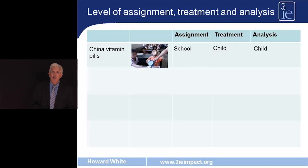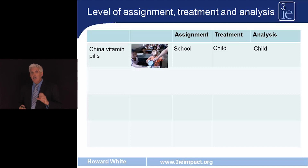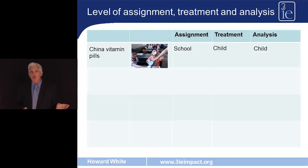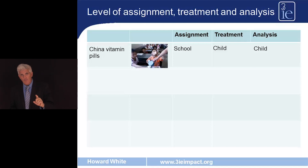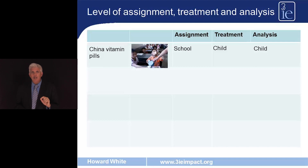The first example comes from China: a programme in rural schools providing vitamin pills to children to tackle anaemia and improve learning outcomes. 60 schools were identified as eligible, and 30 were randomly chosen to receive the programme with the other 30 as the control group. The unit of assignment is the school; in chosen schools every child receives the vitamin pill, so the unit of treatment is the child; and we analyse anaemia status and learning outcomes of children, so the unit of analysis is also the child.